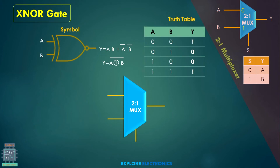Similarly, if we implement XNOR gate: XNOR gate will be exactly reversed to XOR gate, it will be having the output a XNOR b, which is (a XOR b)-bar. The output when a b is 0 0 will be 1, and when a b is 1 1 output is 1. In the other two cases, output will be 0.